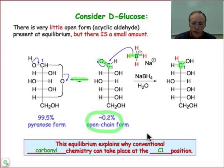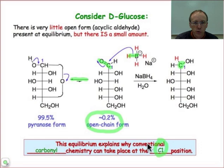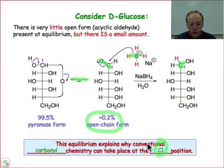The reaction at C1 — the chemistry usually associated with carbonyls — will still happen at C1 through this equilibrium process.